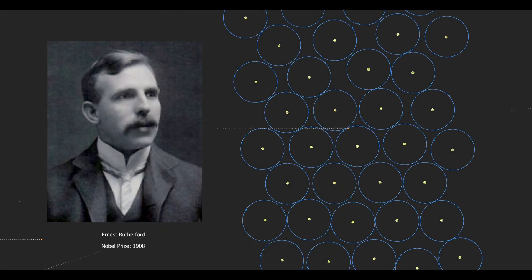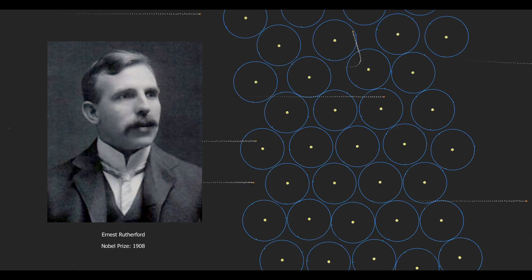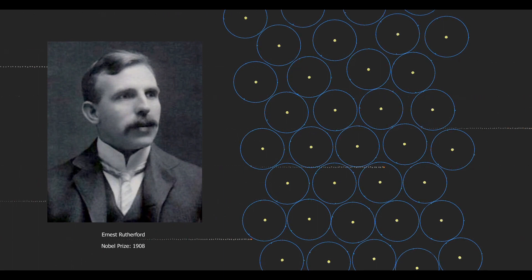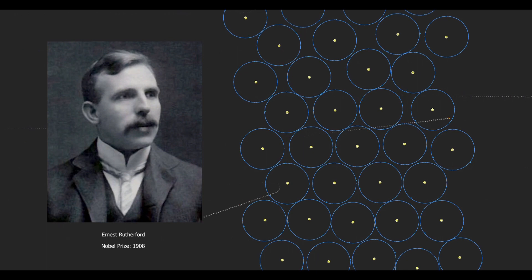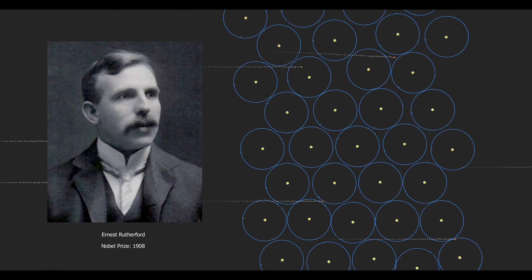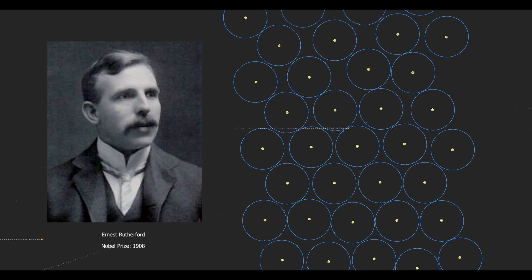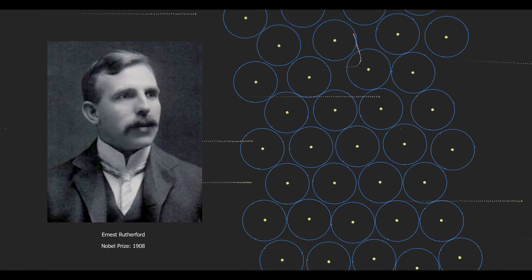Based on his results, Rutherford developed and published his atomic model in 1911, in which the electrons circulate around the positively charged nucleus. The diameter of the nucleus is about one ten-thousandth of the atom's diameter.